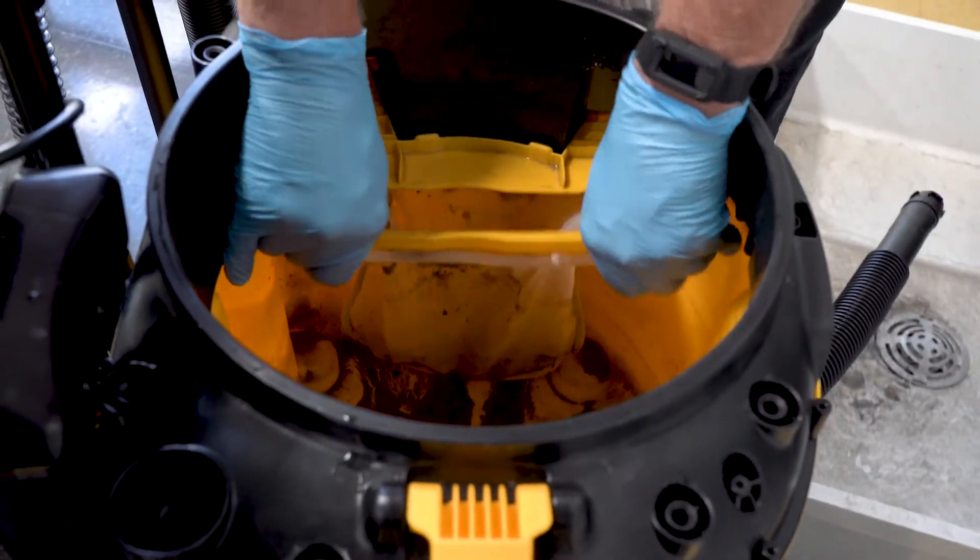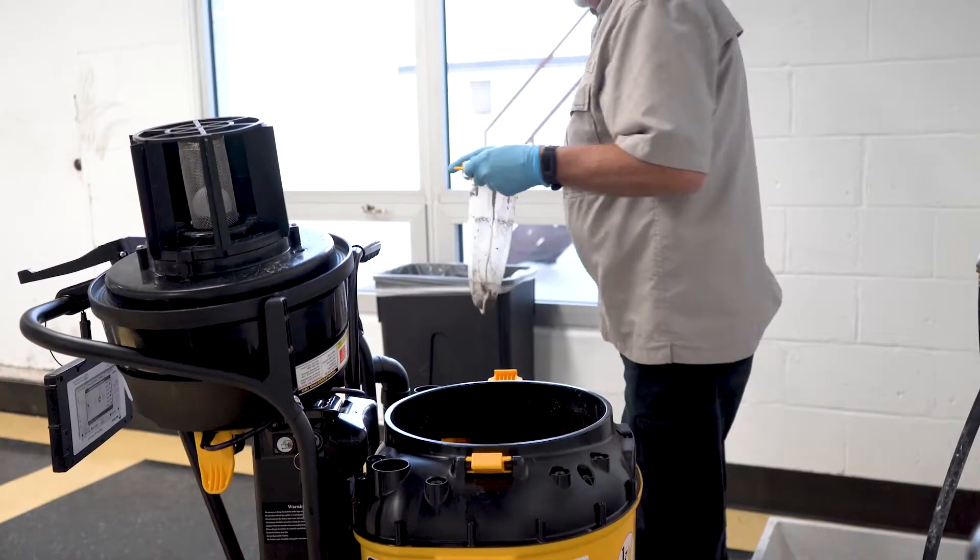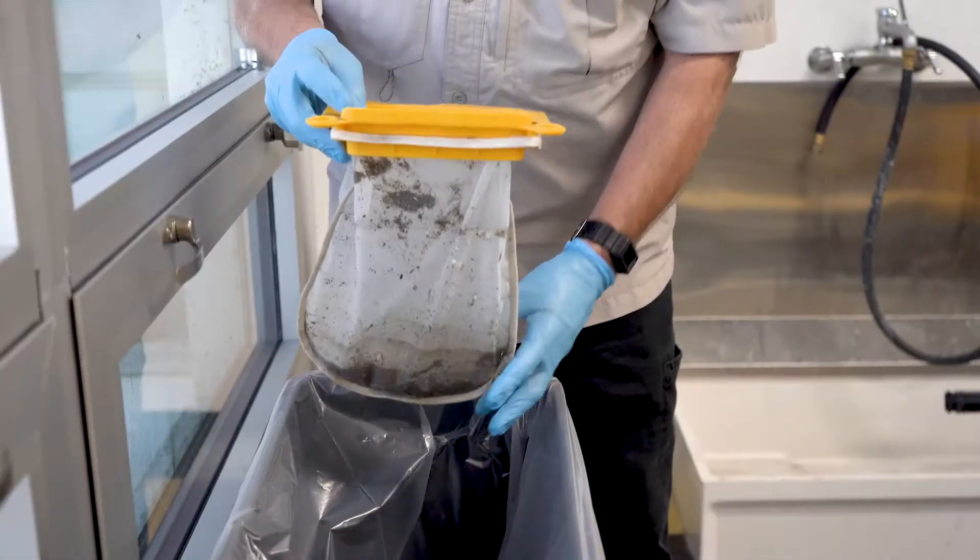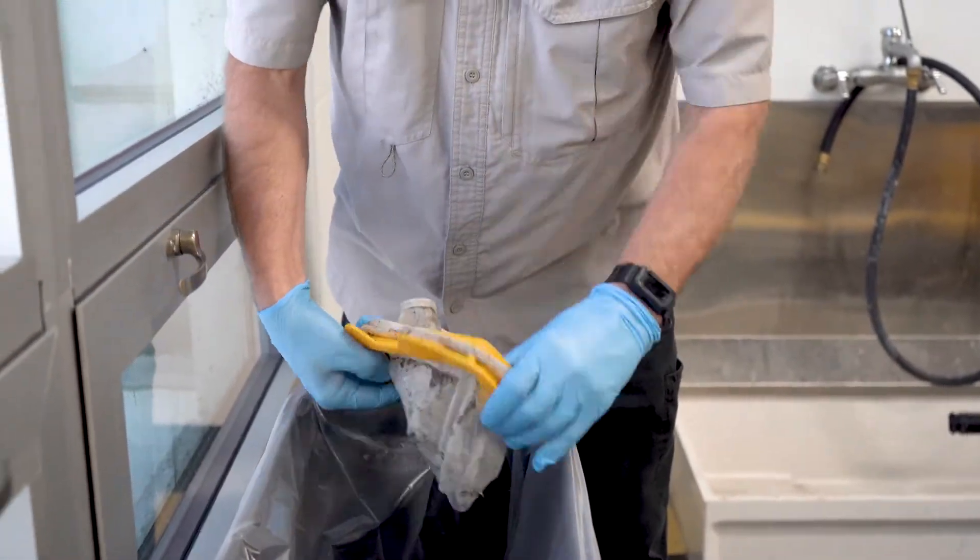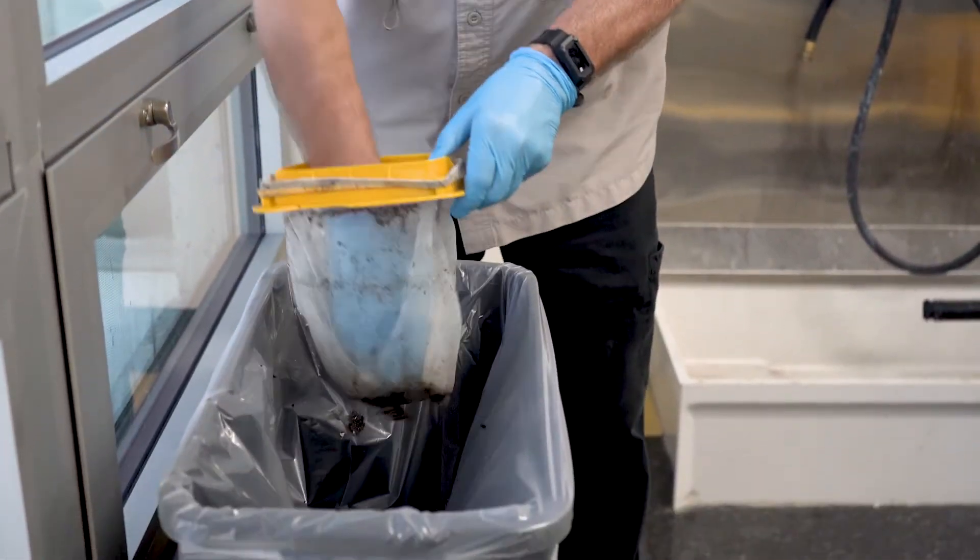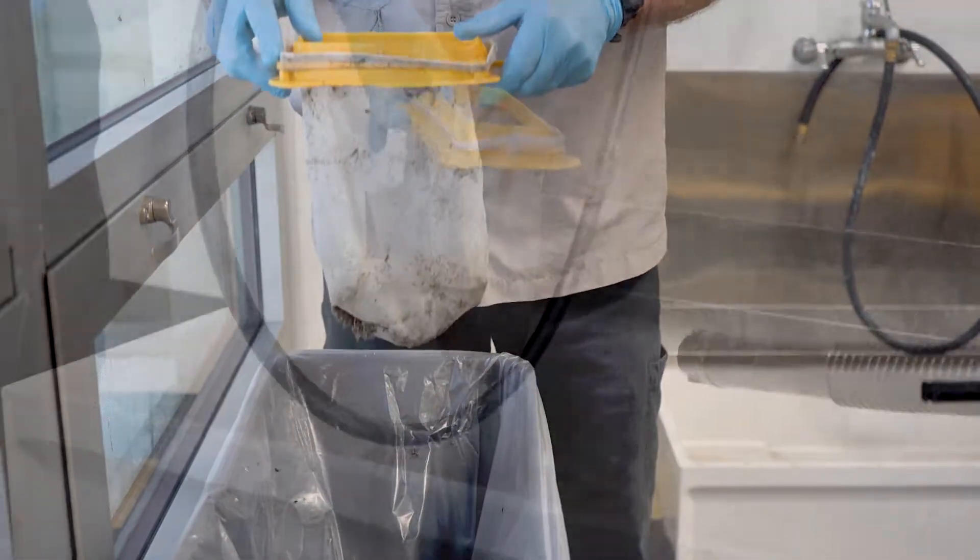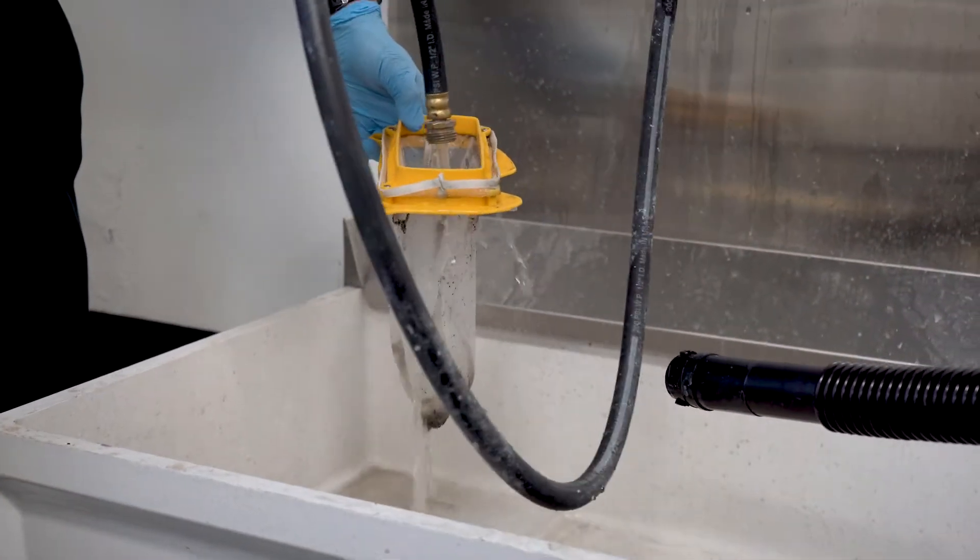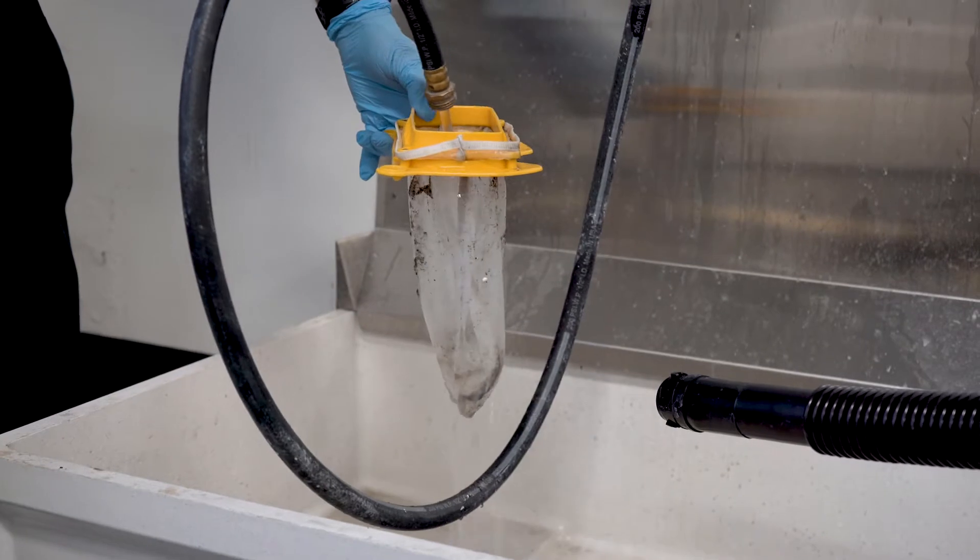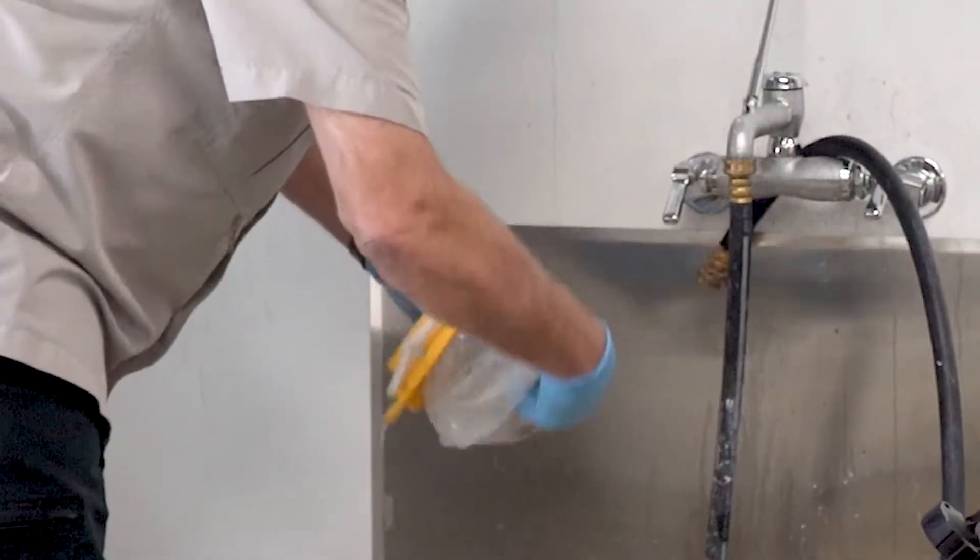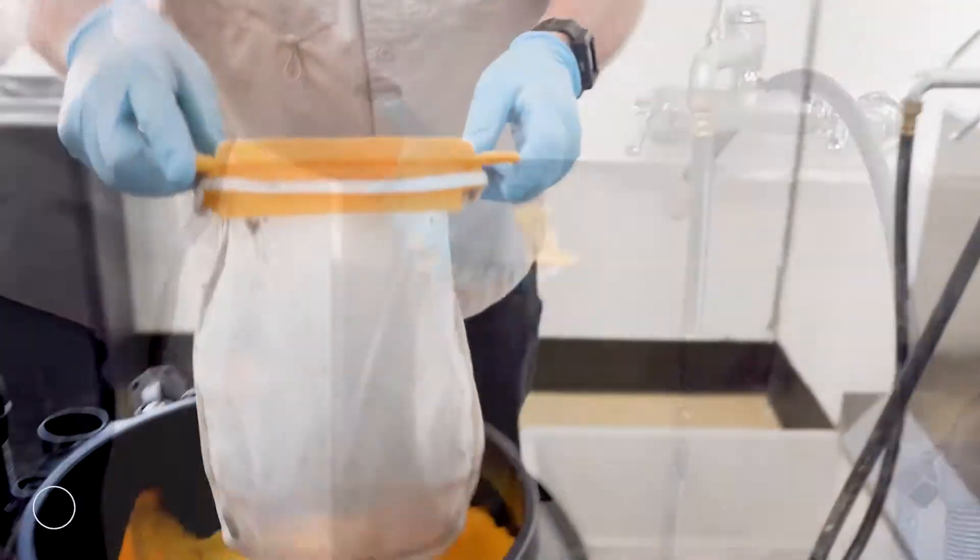Next, remove the filter bag from the vacuum tank. Empty the contents of the filter bag into the trash can by turning it inside out and removing all large debris. Then grab a hose and rinse the filter bag until it is free of debris. When it is clean, turn the bag right side out and place it back into the vacuum tank.